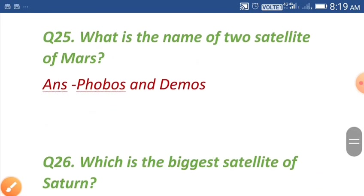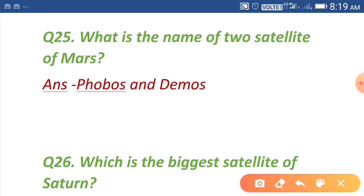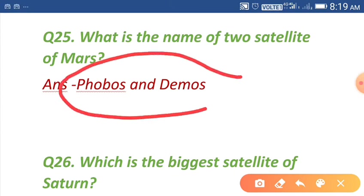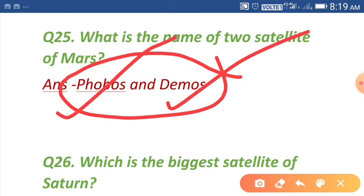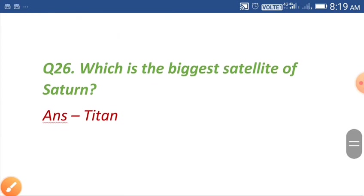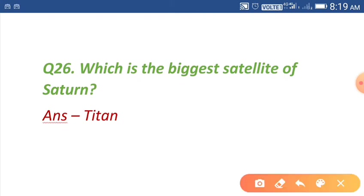Question number twenty-five: what are the names of the two satellites of Mars? The names of the two satellites of Mars are Phobos and Deimos. Question number twenty-six: which is the biggest satellite of Saturn? Titan is the biggest satellite of Saturn.